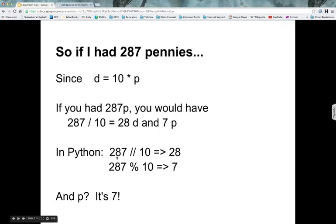And again, in Python, you just do 287 slash slash 10, which would give you 28. That's the number of dimes you get. And then the remainder is seven, which is number of pennies in 287 pennies, if you take away all the dimes. And what's p? Well, it's just seven, right? That's the number of pennies.